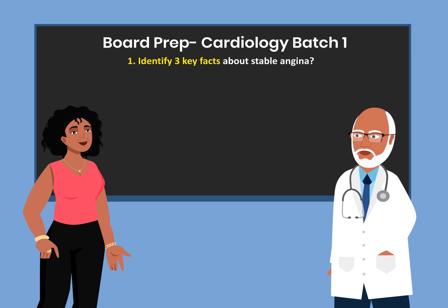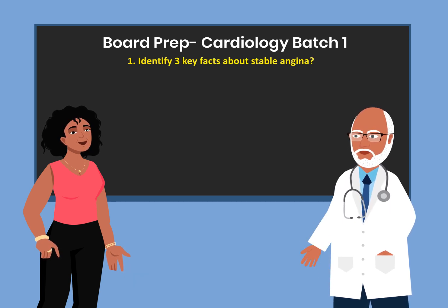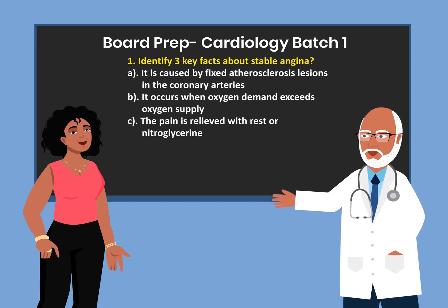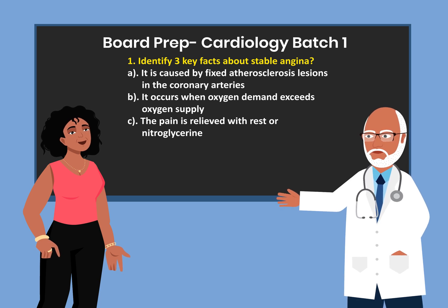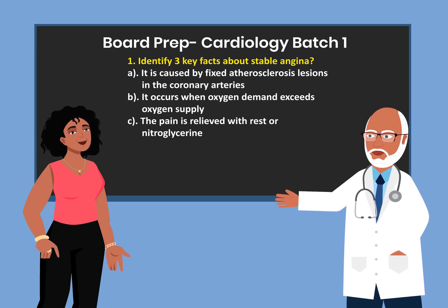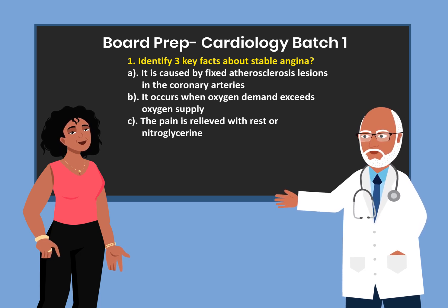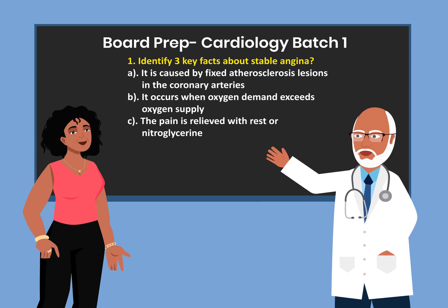Identify three facts about stable angina. It is caused by fixed atherosclerotic lesions in the coronary arteries. It occurs when oxygen demand exceeds oxygen supply, and the pain is relieved with rest or nitroglycerin.